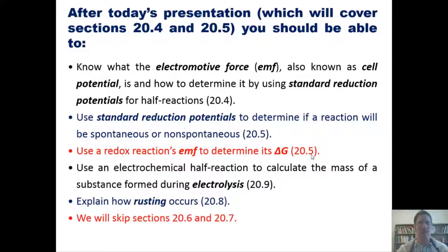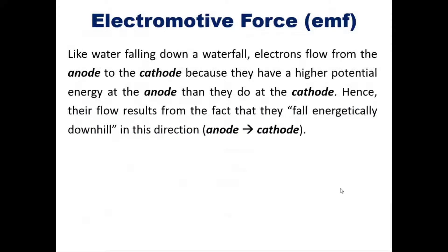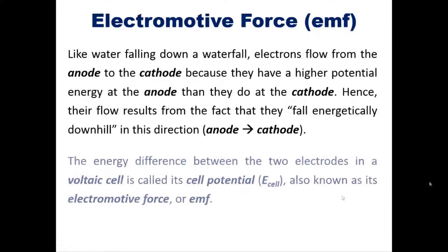That's the lineup, so let's get started. Now, like water falling down a waterfall, electrons flow from the anode to the cathode because they have a higher potential energy at the anode than they do at the cathode. Hence their flow results from the fact that they fall energetically downhill in this direction: anode to cathode. The energy difference between the two electrodes in a cell is called its cell potential or E_cell, also known as its electromotive force or EMF.